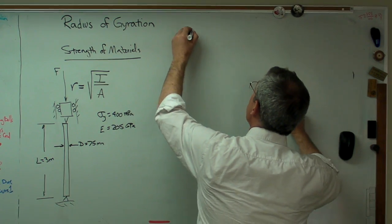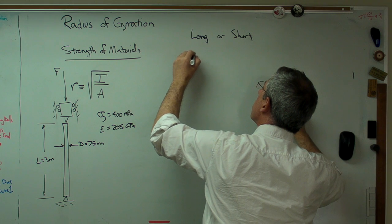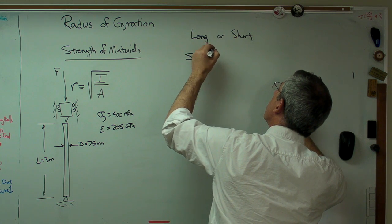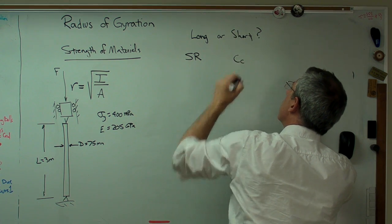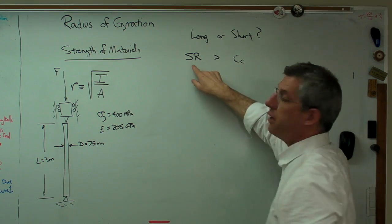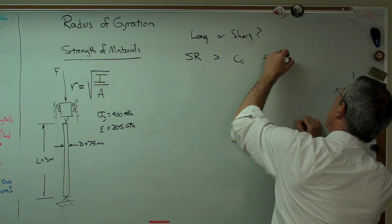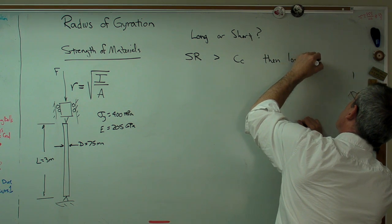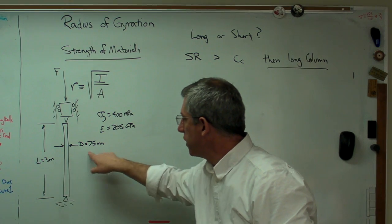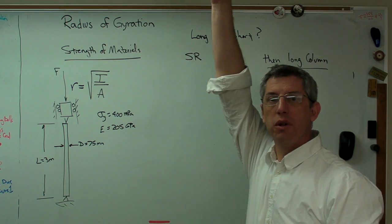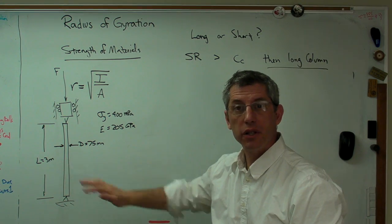All right. The question we need to know now, whether we've got a long column or short column, we need to compare something called the slenderness ratio and the column constant. Let's see, that's usually, okay. If the slenderness ratio is larger than the column constant, then I've got a long column. If not, I've got a short column. All right. Now, 3 meters long and 75 millimeters wide, it's huge. It wouldn't fit in this room, and it's only that wide. So a pretty fair bet that this is a long column. But let's show that mathematically.